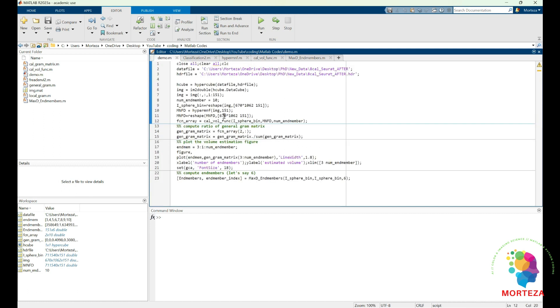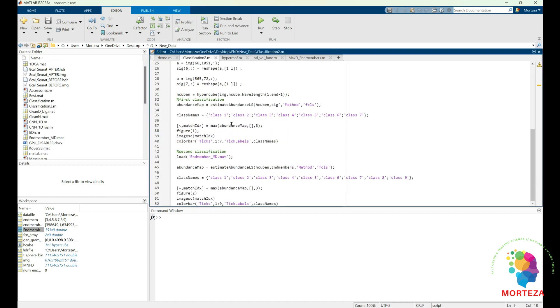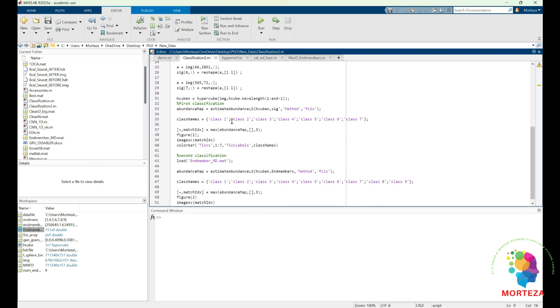But now that we have extracted nine endmembers from my hyperspectral image, let's go and classify it. Okay, I have to run this script one more time because we know that we have nine endmembers, and I had to run this function one more time but with nine endmembers. I'm going to save these nine endmembers and use them for the classification. Okay, let's go to the coding for classification.